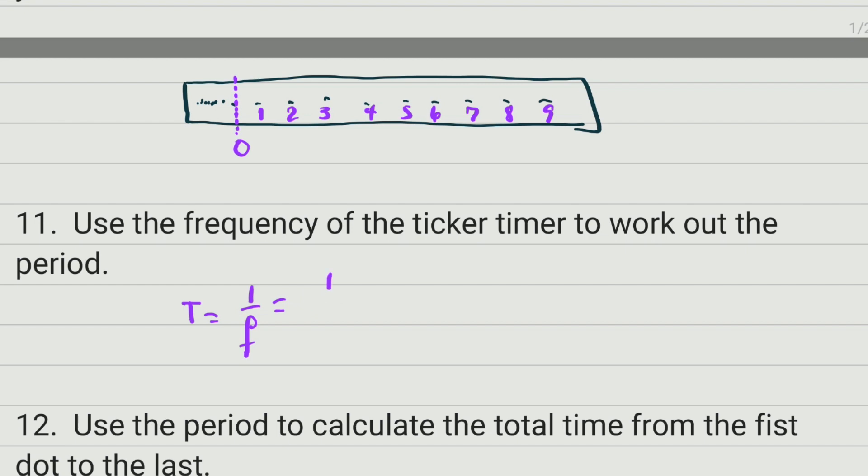We are going to use the 40. So the period will be one divided by 40, which equals 0.025 seconds. This is the time between two dots.